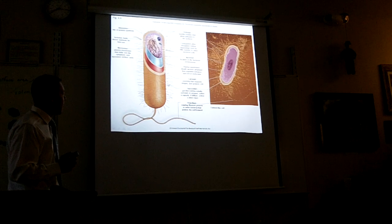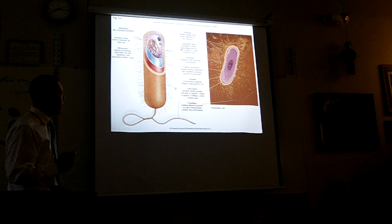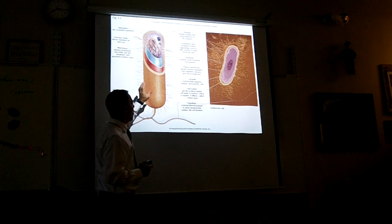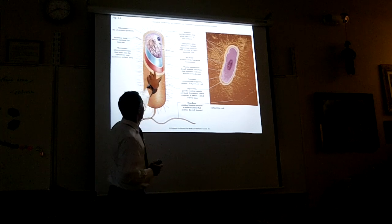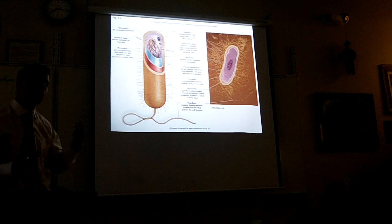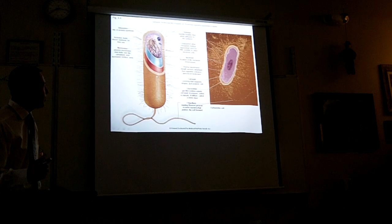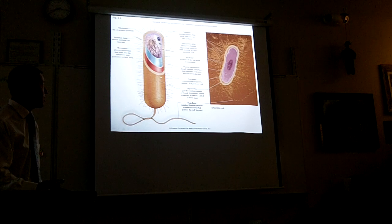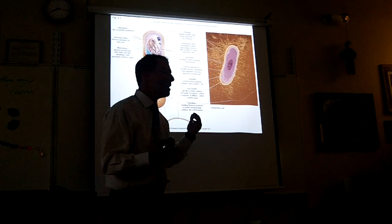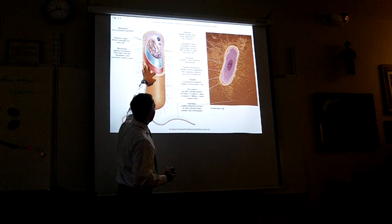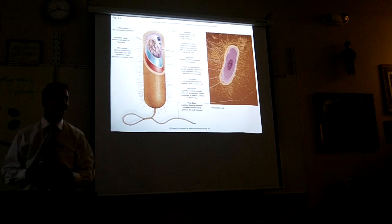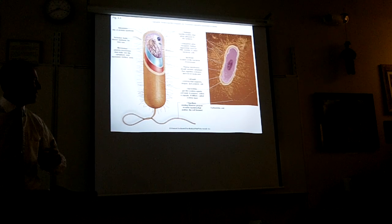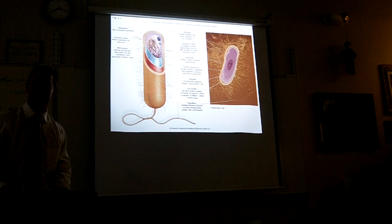Underneath the fimbriae there's a jelly-like layer called the glycocalyx — also called a capsule or slime layer. It has a protective function; it'll protect this cell from harm, from harmful chemicals. For instance, penicillin is a drug you take to kill these things, and often they have such a thick slime layer that the penicillin doesn't hurt them. A lot of these organisms evolved this after people started taking penicillin. These things changed and evolved and came up with a slime layer to protect them.